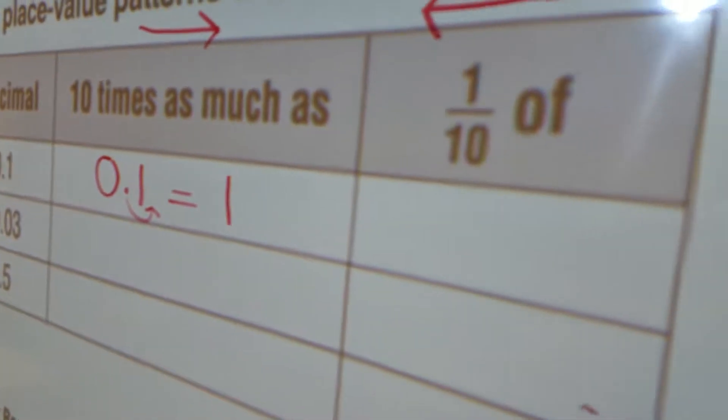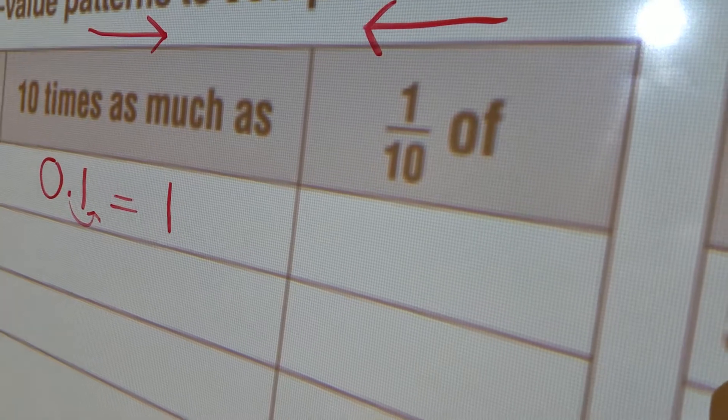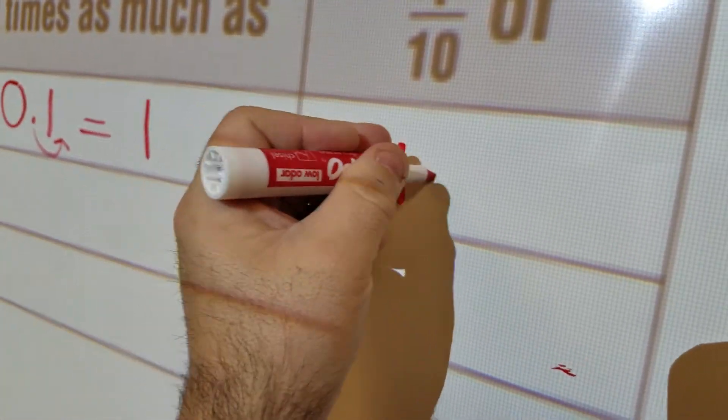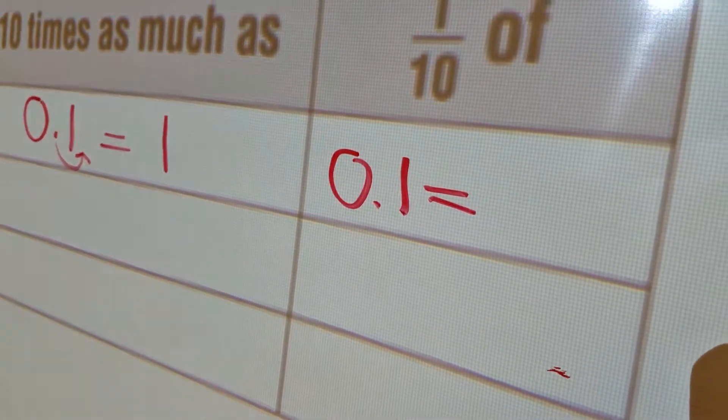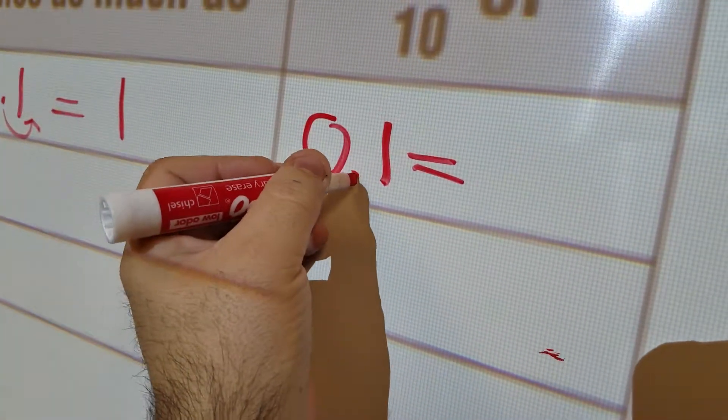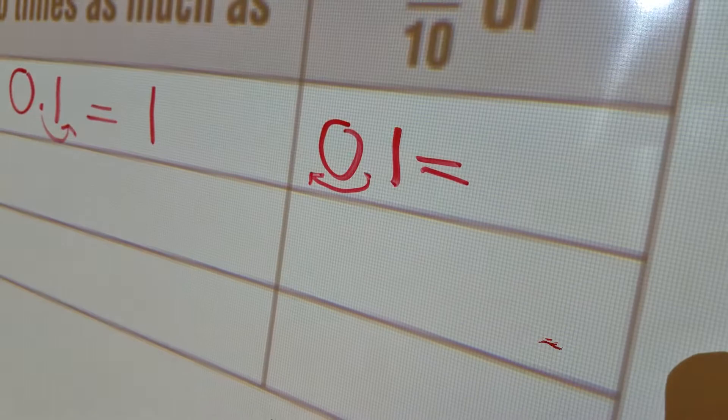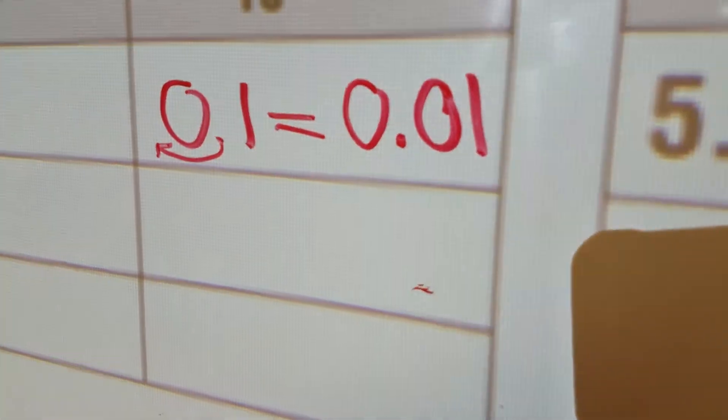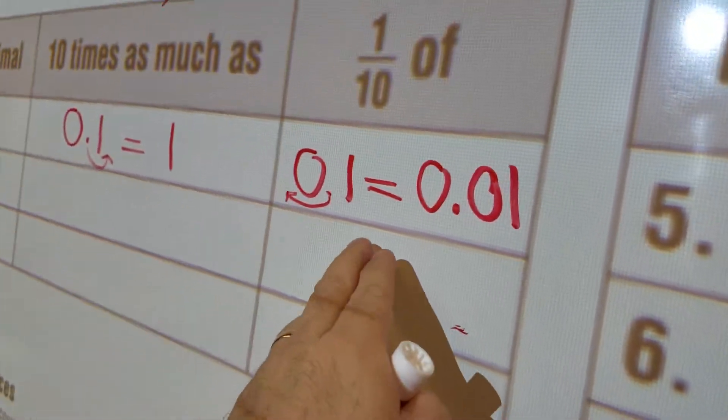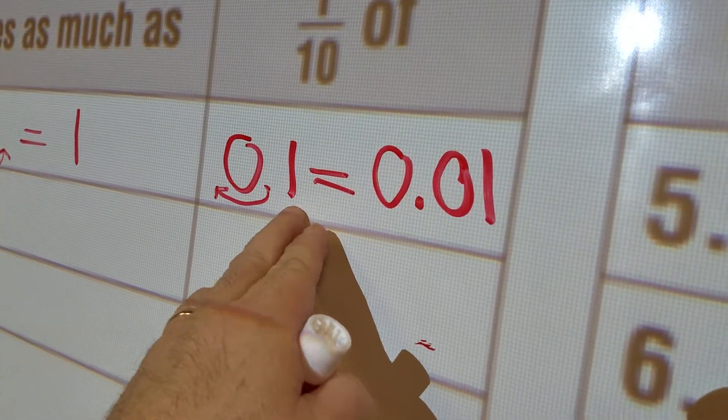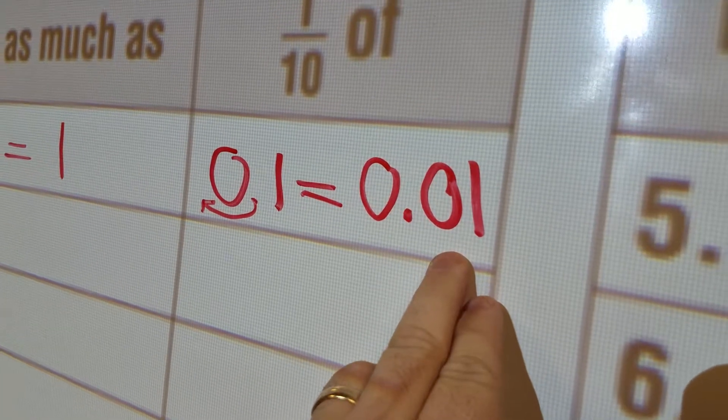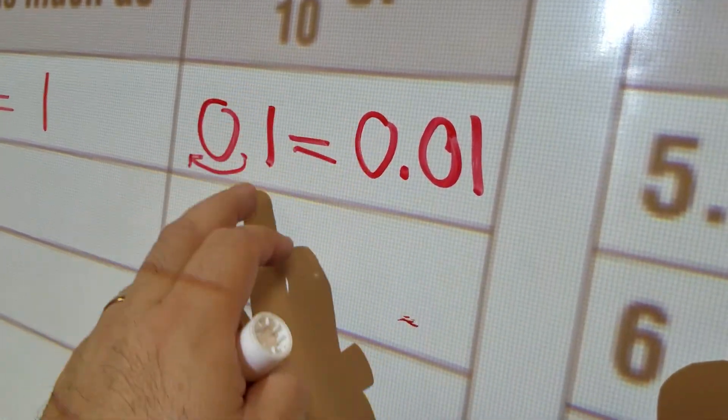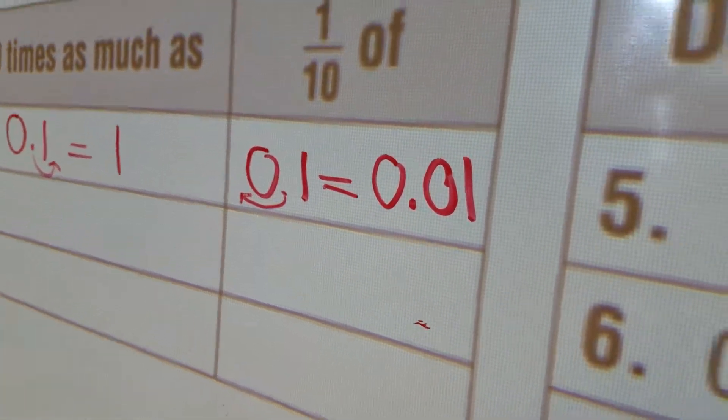Well, let's look at it the other way. What's 1 tenth of, in this case, 1 tenth? 1 tenth of 1 tenth. I'm going to move my decimal over one spot to the left. So my answer is 0.01. And if you think about it, what's 1 tenth of a dime? Well, that's a penny. Again, going with the math analogy. So 1 tenth of 1 tenth is 1 hundredth.